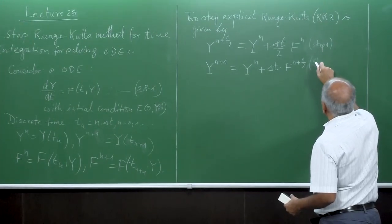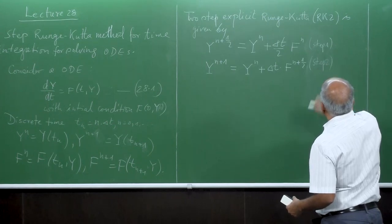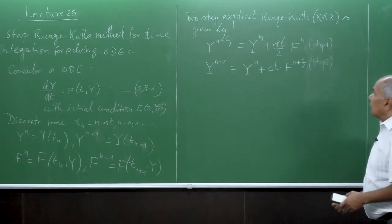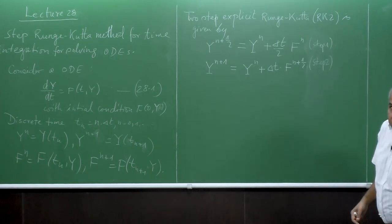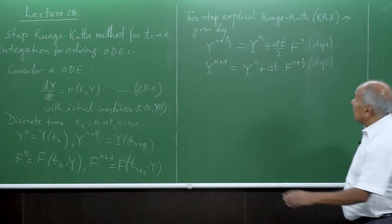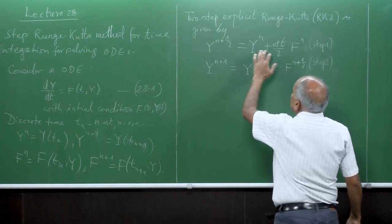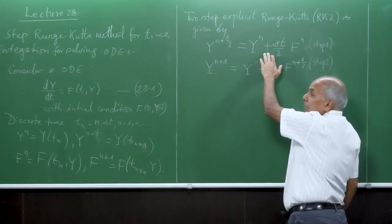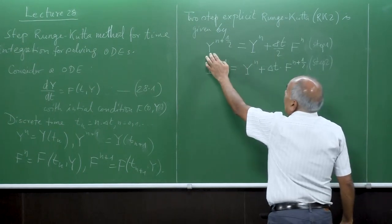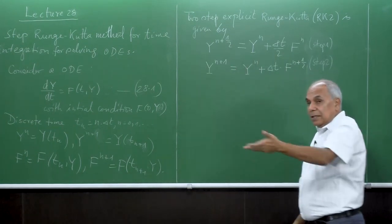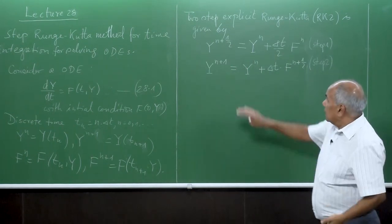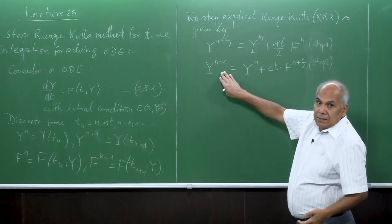In the first step, what we do is compute the intermediate step — this is called the predictor. And then this is the corrector.